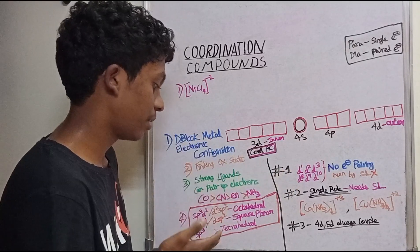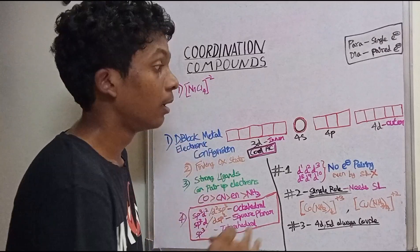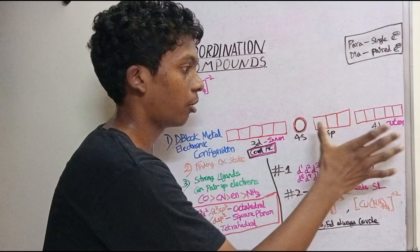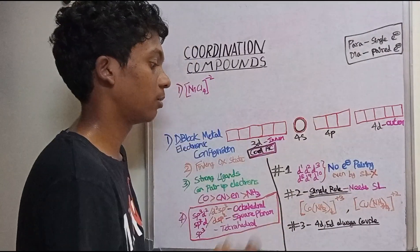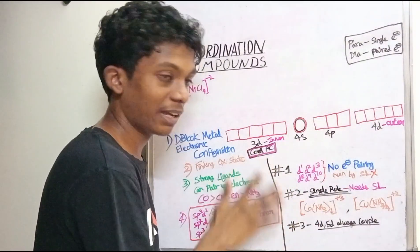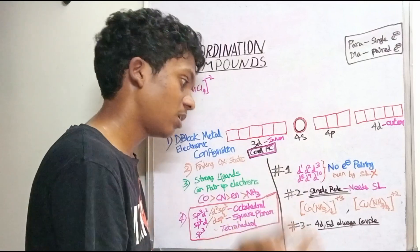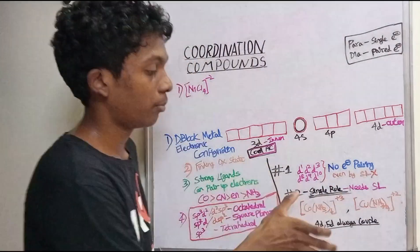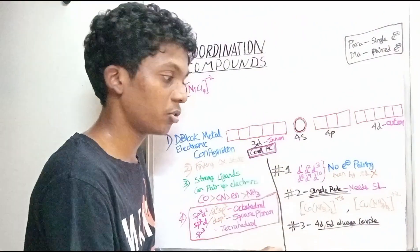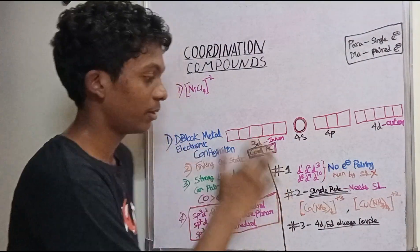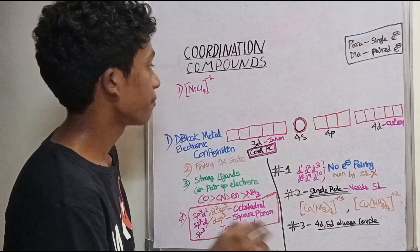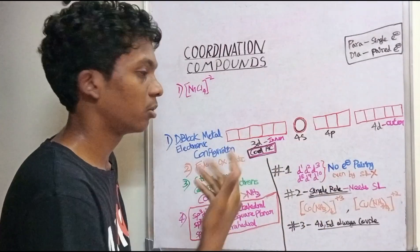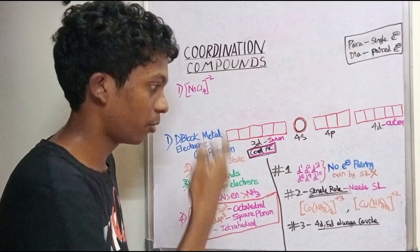These are the normal rules: paramagnetic and diamagnetic, and inner orbital versus outer orbital. The third rule is a special exceptional trick. If you keep this in mind, you don't need to work out full coordination compound calculations — these three rules will explain everything.